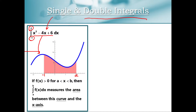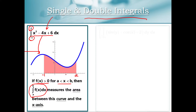Now we have a graphical interpretation here. If we're lucky enough to have a curve that is always positive on our interval, then our single integral measures the area between our curve and the x-axis on this interval, in this case from negative 1 to 2.